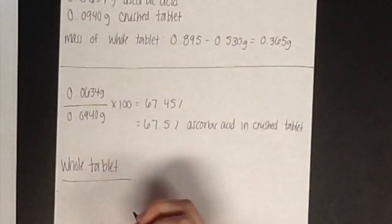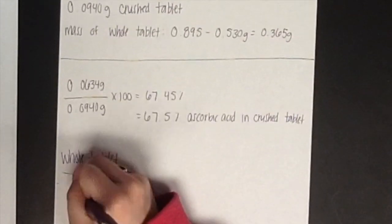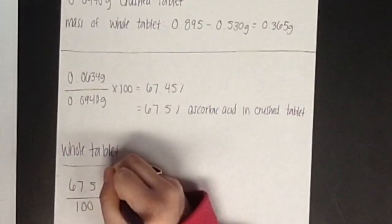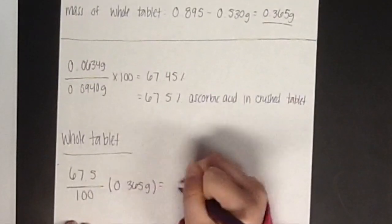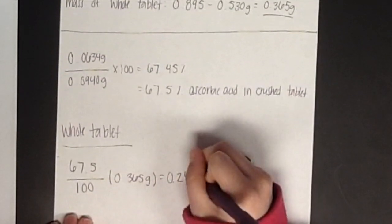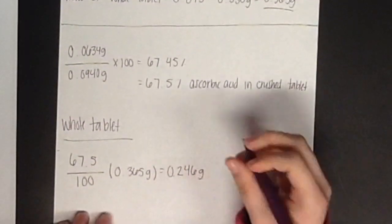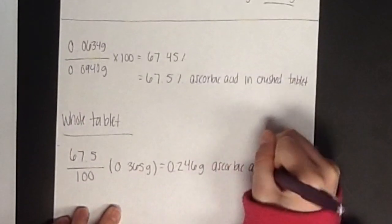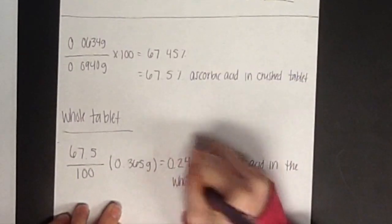To calculate the total amount of ascorbic acid in the whole tablet, divide 67.5 by 100 and multiply by the mass of the whole initial tablet. The value calculated is 0.246 grams of ascorbic acid in a whole tablet.